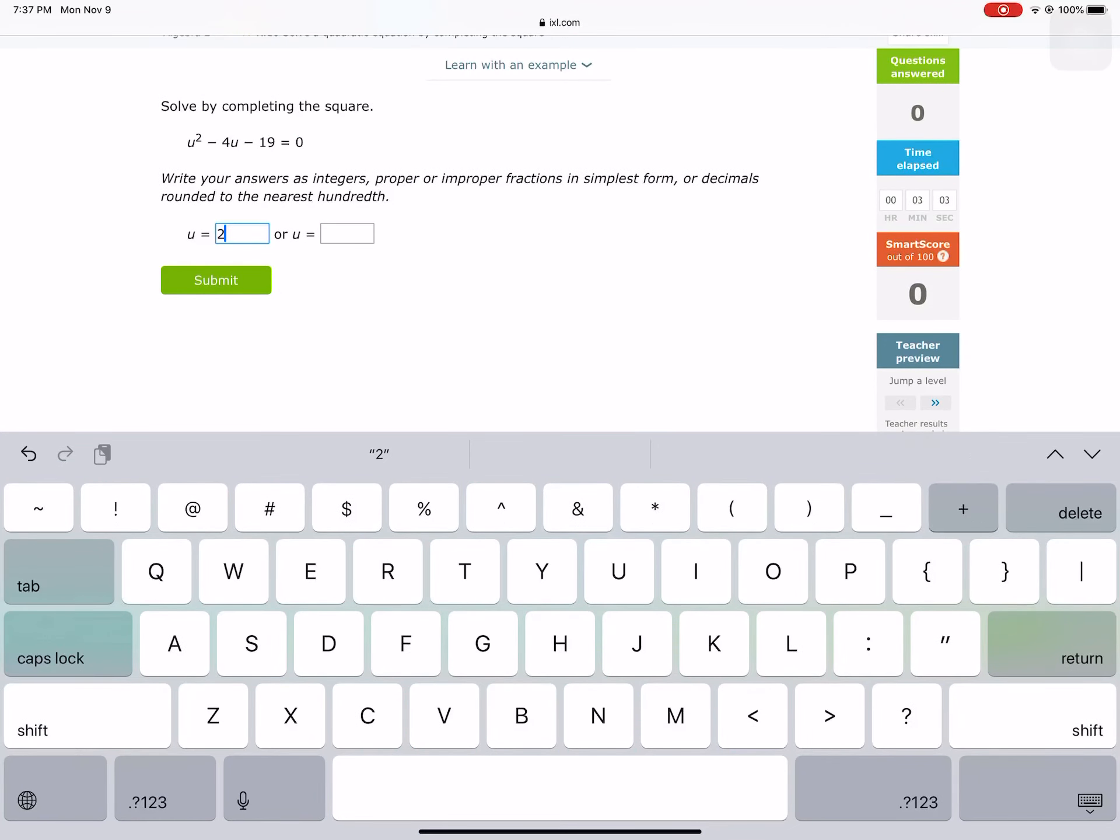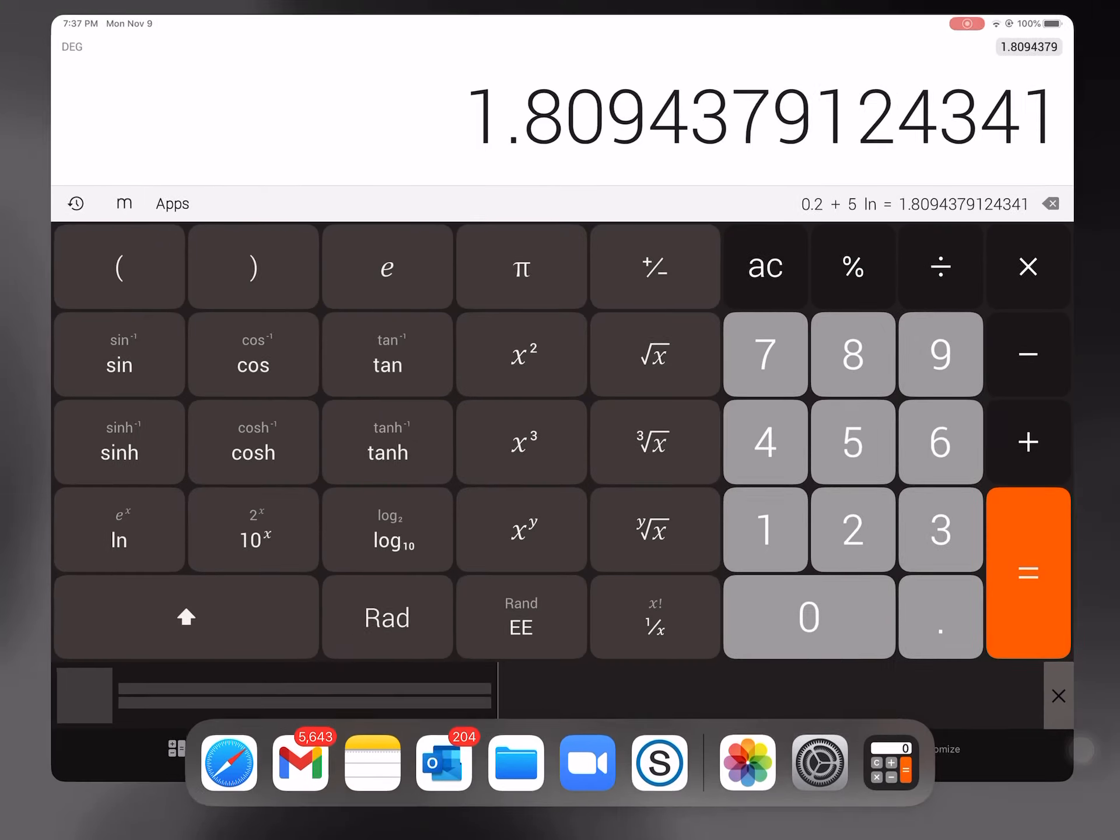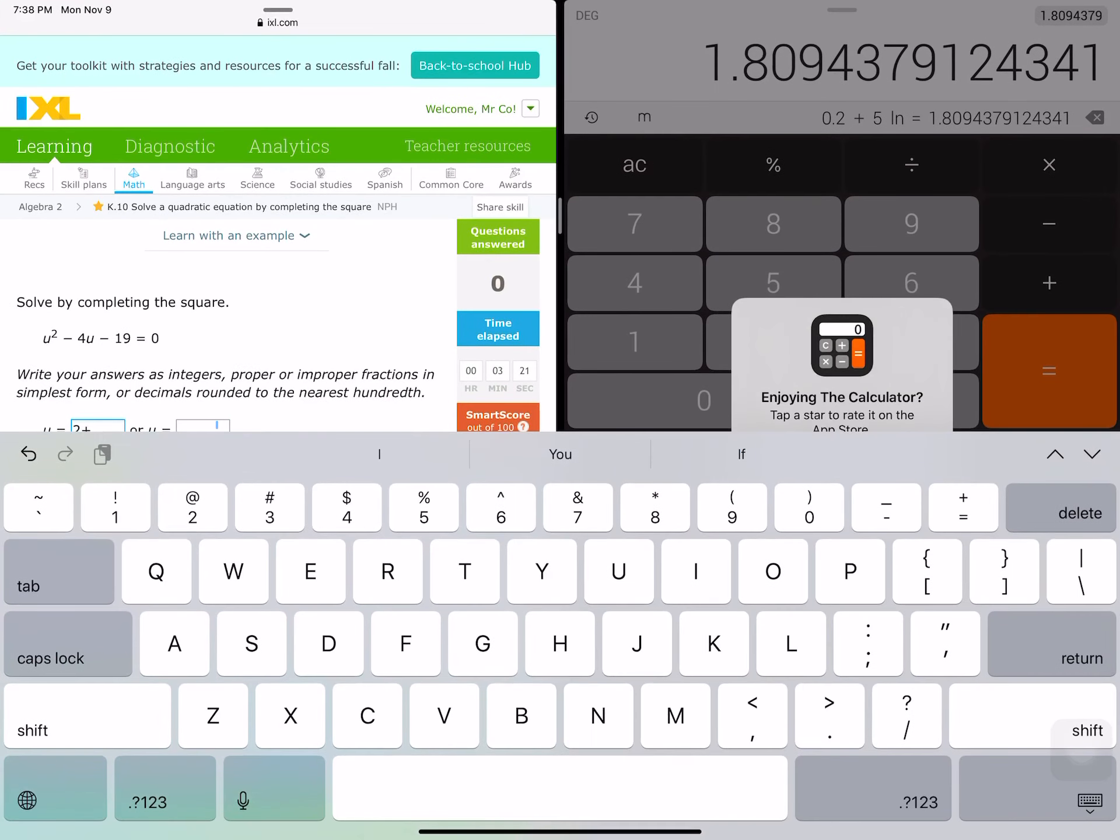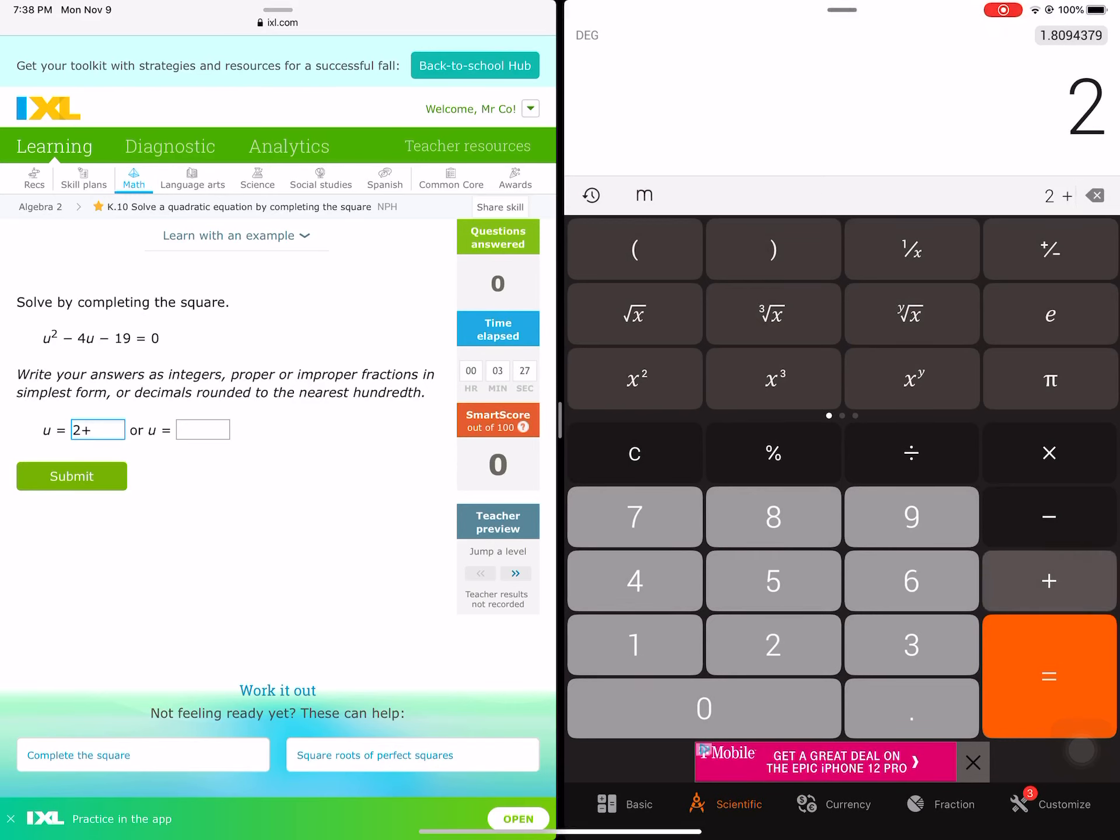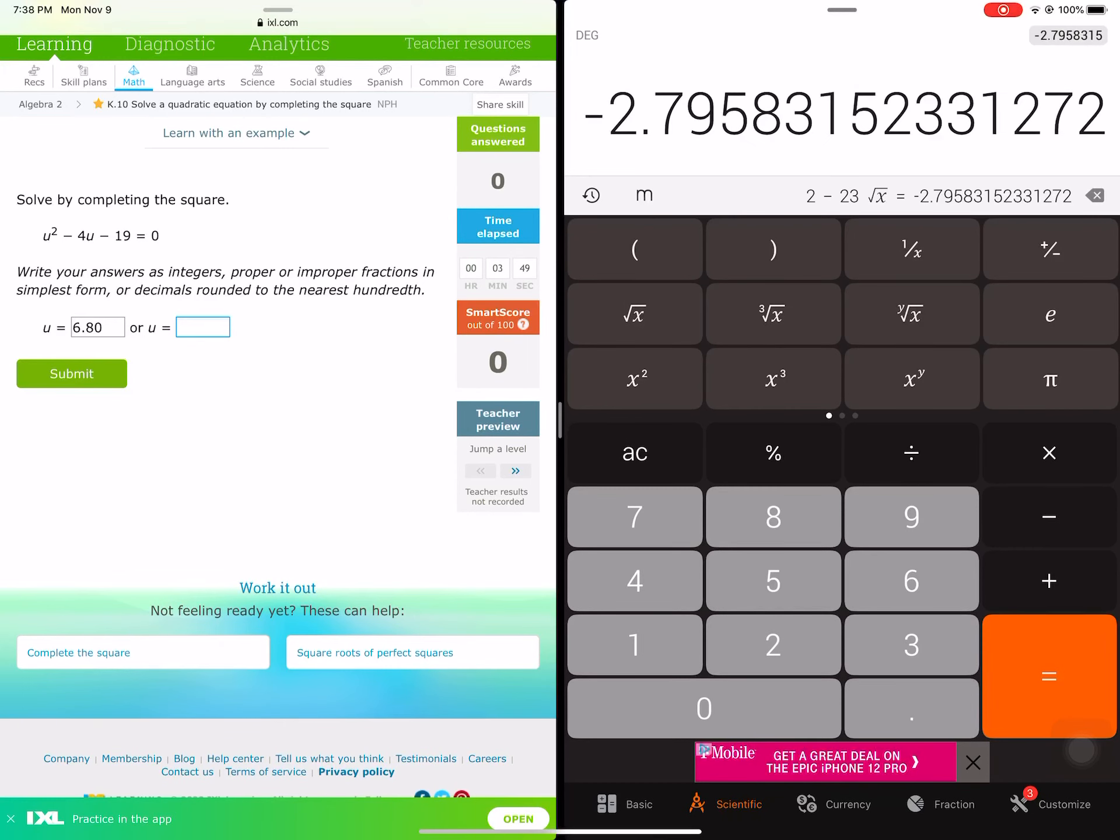Oh, they want us to round the numbers. We need a calculator. Let me take out my calculator. So we're going to do 2 plus 23 square root equals, so 6.79. They wanted us to round to the 100th place, so I'm going to round that up to 6.80. Next one is 2 minus square root of 23. And we're ending with negative 2.79, rounding up 2.8.